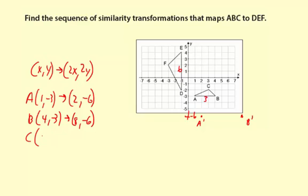Now let's look at C. That one is (3, -2). And that will go to (6, -4).